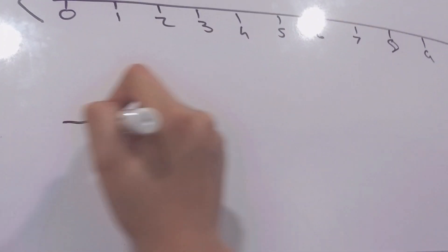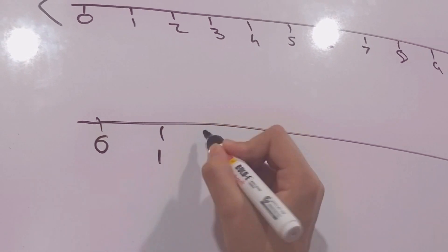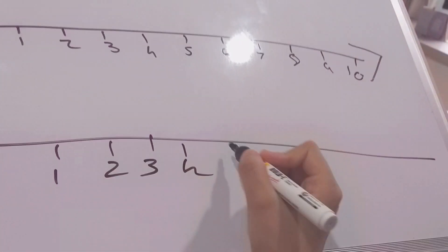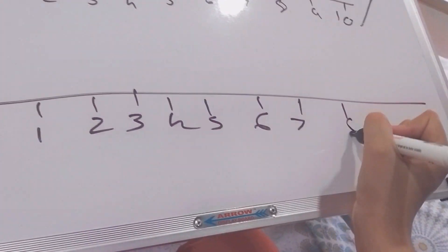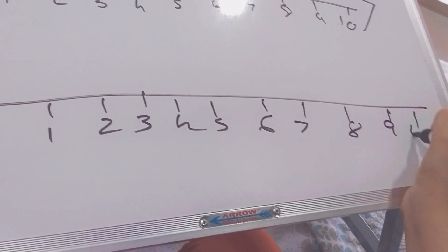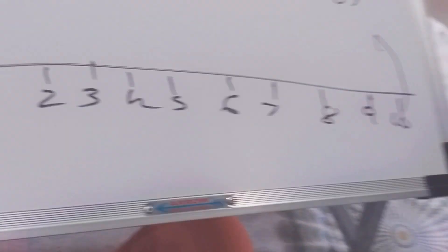And if you have written all your ten numbers in this line, then also you have to draw arrows and that's very, very necessary, right? Then also you have to draw.